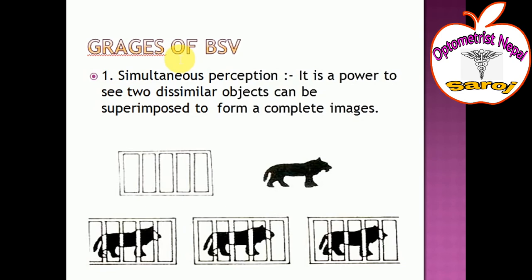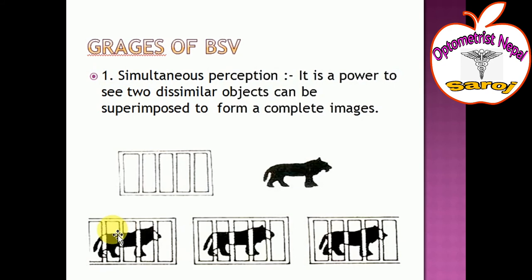Now, the grades of binocular single vision — there are three grades. The first grade is simultaneous perception. Simultaneous perception is the power to see two dissimilar objects that can be superimposed to form a complete image. For example, a prism and a line are two dissimilar objects that are superimposed — prism with line — to form a complete image. This is called simultaneous perception.